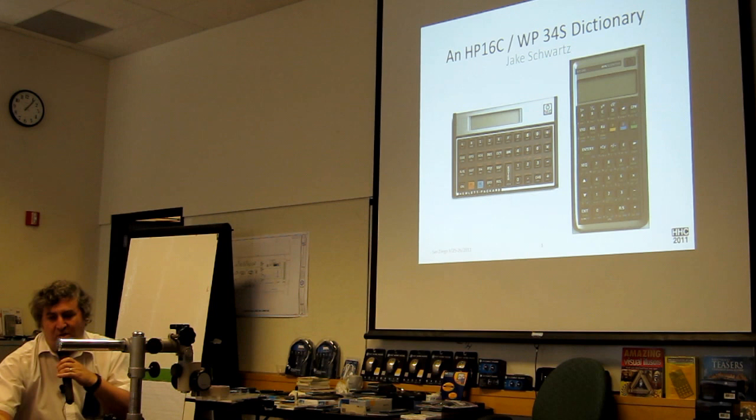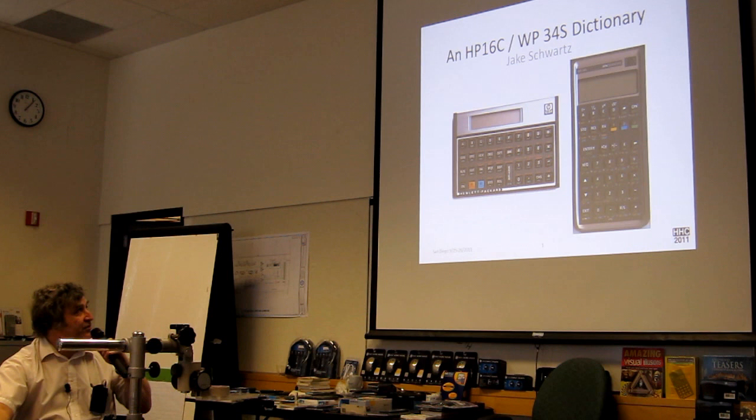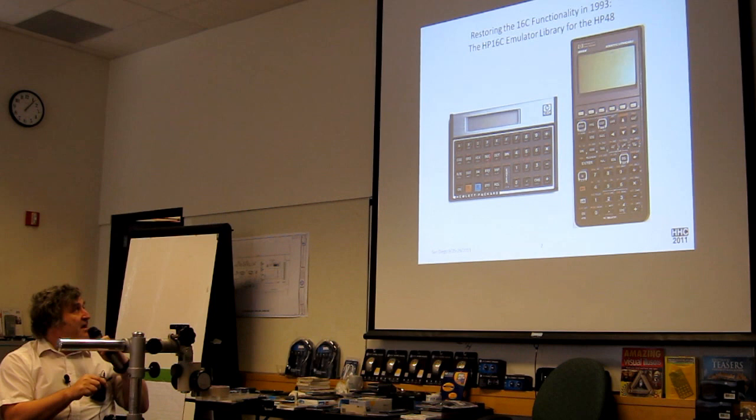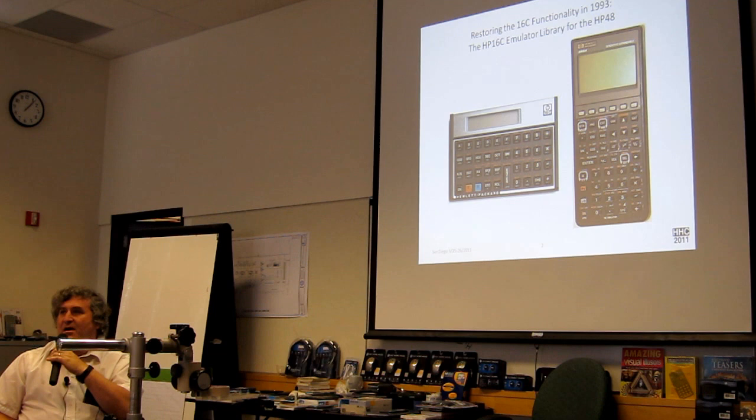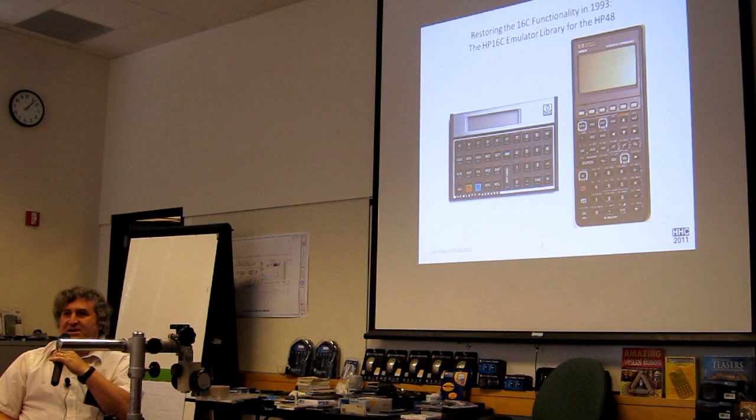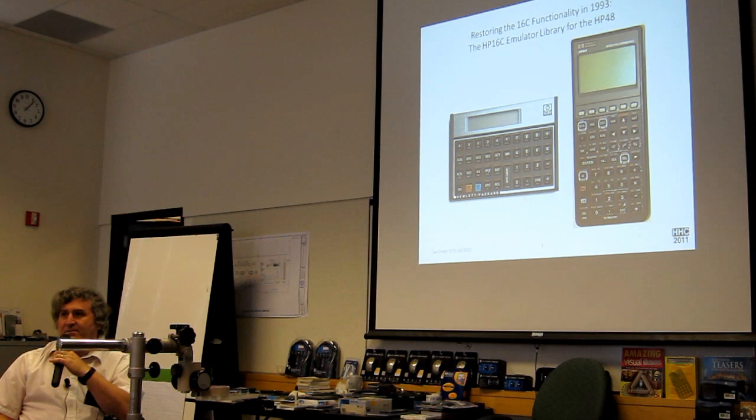I thought it might be neat to take every 16C function and line it up next to the 34S function so you could see a corresponding keystroke sequence between the two. And in your packet, I guess in the smaller staple handout as a color copy of my six-page presentation, the last four pages of which is a chart basically based on about six pages in the 16C manual. It starts on page 120. It's the complete function summary, and it's in the order of those functions.